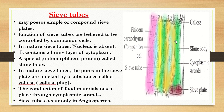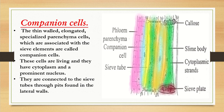In matured sieve tubes, the pores of the sieve plate are blocked by a substance called callose. You can find the callose plug here in the picture — the sieve plate is completely blocked by callose. The conduction of food material takes place through the cytoplasmic strands. Sieve tubes occur in angiosperms only.